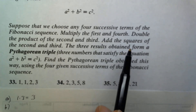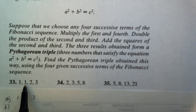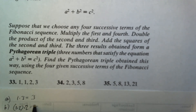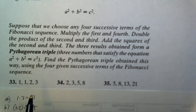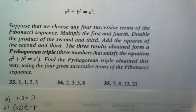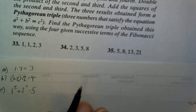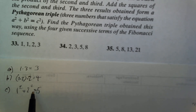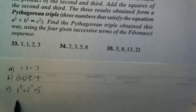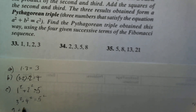The second step is to form the product of the second and third and then double it: 1 times 2 times 2 equals 4. The third step is to add the squares of the second and third: 1 squared plus 2 squared equals 5. This is indeed a Pythagorean triple because 3 squared plus 4 squared equals 5 squared, since 9 plus 16 equals 25.